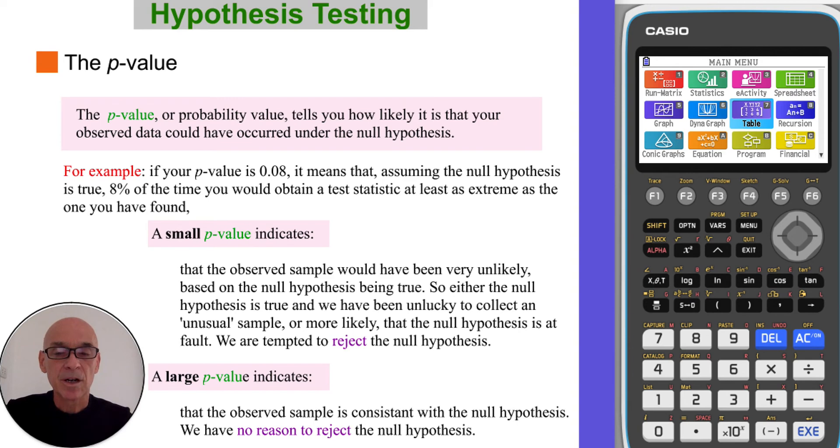So a small p-value indicates that the observed sample would have been very unlikely based on the null hypothesis being true. So we'll be tempted to reject the null hypothesis. Whereas a larger p-value indicates that the observed sample is consistent with the null hypothesis. So there will be no reason to reject the null hypothesis.